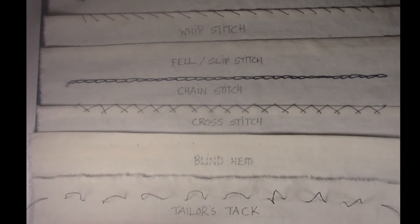Tailor tacks are used to mark your hems for your sleeves and your bottom of your jacket. They're used for your pocket placements and the placements of your buttonholes. You should never be using your tracing wheel or tracing paper in this project. We will only be using tailor's chalk and tailor tacks.